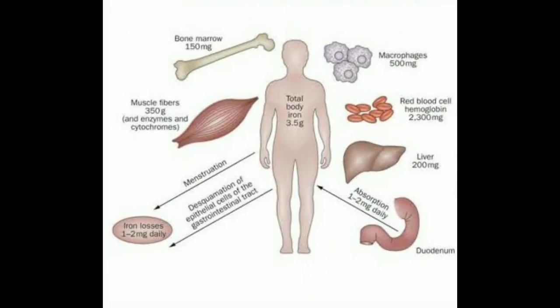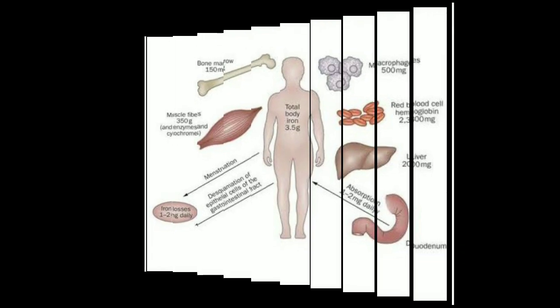A man excretes about 0.6 mg of iron each day, mainly in feces. Additional quantities of iron are lost when bleeding occurs. For a woman, additional menstrual blood loss brings long-term iron loss of about 1.3 mg per day.